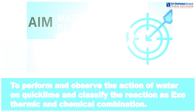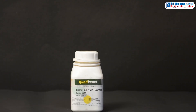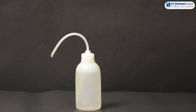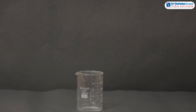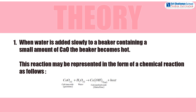The materials required are calcium oxide, water, and a beaker. The theory of this experiment is: when water is added slowly to a beaker containing a small amount of CaO, the beaker becomes hot. This reaction may be represented in the form of a chemical equation as follows.